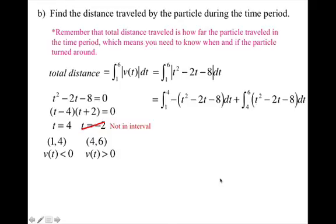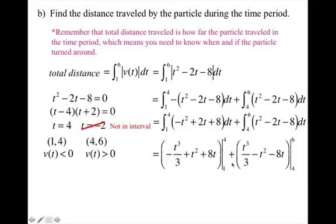So now I can set up my integral into two pieces. The first interval is from 1 to 4, and I know that my velocity is negative on that interval, plus the integral from 4 to 6, where I know the velocity is positive. So for each one, first off, I'm going to distribute the negative through in the first integral. Now I can go ahead and take the antiderivative of each piece, and the first one I'm going to evaluate from 1 to 4, and the second one I'm going to evaluate from 4 to 6.